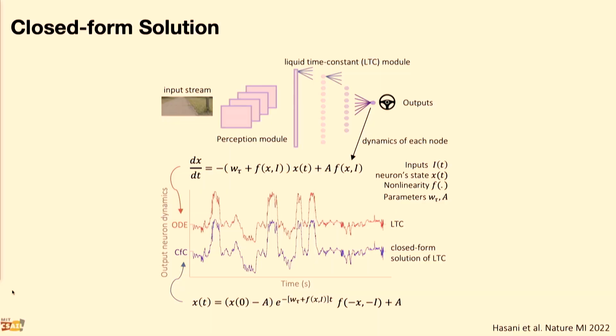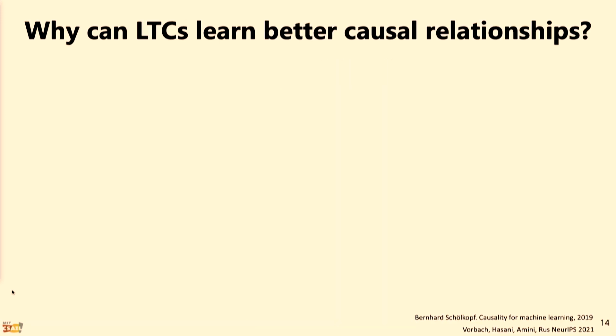I promised you a fast solution, but these networks are defined by differential equations, so you might ask: do they really need numerical problem solvers? Because that would actually be a huge computational hit. It turns out we have a closed-form solution for the equation that goes inside the neuron, and the solution has a good bound — it's good enough. You can see in this chart, in red, the ODE solution, and in blue, the solution with our approximation, and they are really quite close to each other.